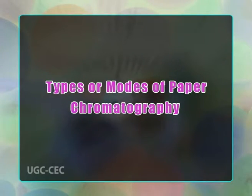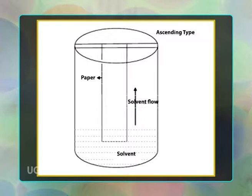Types or modes of paper chromatography: Based on the way development of the chromatogram on paper is done, there are broadly five types. Ascending chromatography — the chromatogram ascends; development occurs due to the solvent moving upward on the paper. The solvent reservoir is at the bottom of the beaker, and the paper tip with sample spots just dips into the solvent at the bottom so that spots remain well above the solvent level.